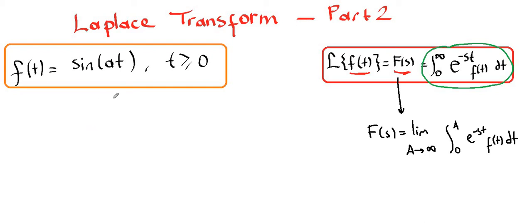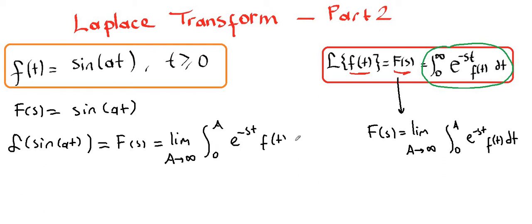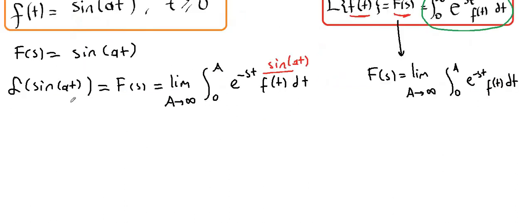Let's find the Laplace transform of sine of at. Our given problem is f of t equals sine of at, where t is greater than or equal to zero. We define f of s as the Laplace transform of sine of at, and we're going to apply the definition of Laplace. So the Laplace of sine of at equals f of s, and we can solve this integral to find the Laplace transform.